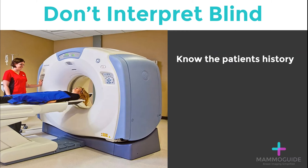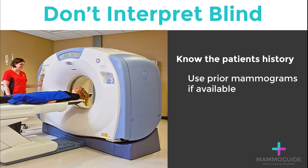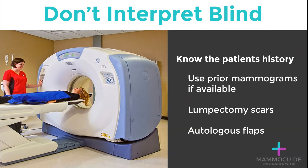The first rule is to not interpret the CT exam blind. Know the patient's history. Use prior mammograms if available — this step is often neglected. Have they had prior surgery? Is this simply a lumpectomy scar? Or maybe they even had a mastectomy with flap reconstruction. You need to know this before you comment on the CT findings.